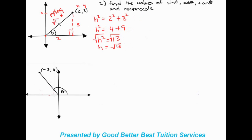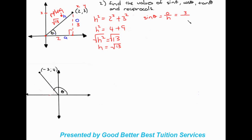So h is equal to the square root of thirteen. We'll write that in so we can refer to it. Now we need to find sine theta first — sine theta is opposite over hypotenuse. Let's identify which side is which: we have theta over here, the opposite side, the hypotenuse, and the adjacent. So the opposite side is three and the hypotenuse is the square root of thirteen.